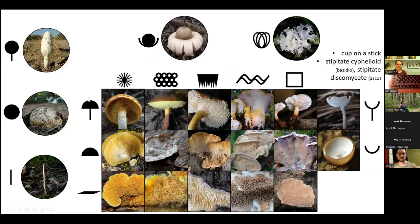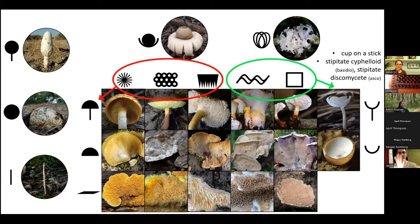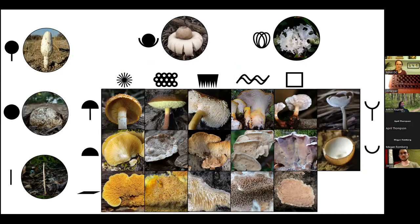Just like we had caps on stems, we can have cups on stems, and the exact same thing is going on — we don't care if it's wrinkled or smooth, and we exclude and lump it with other things if it has gills, pores, or teeth. That gives us 22 nice, simple categories.